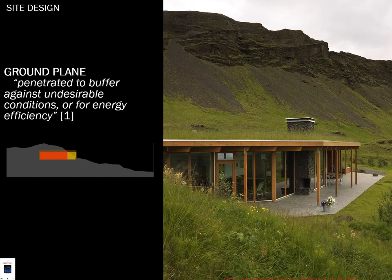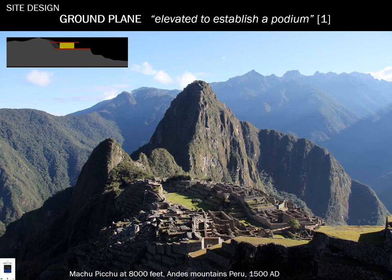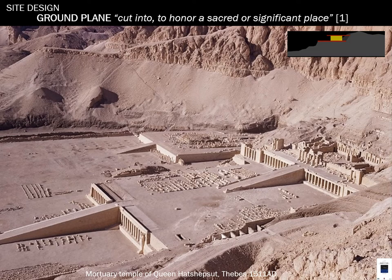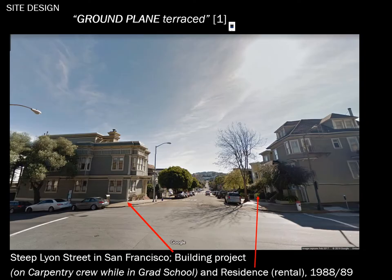For example, the ground plane can penetrate as a buffer against undesirable conditions — an earthen structure with a green roof. With terracing, your ground plane can be elevated to establish a podium, or cut into the earth to honor a sacred or significant place. This example is San Francisco, where I lived in the late 1980s. I renovated a Victorian nearby while working as a consulting engineer, having started in high tech as a physics grad. I also taught astronomy while in San Francisco, in the Presidio Heights area.